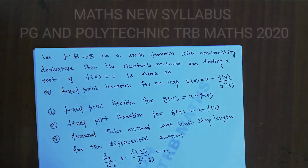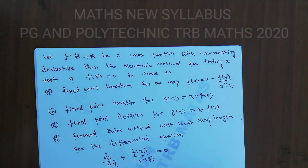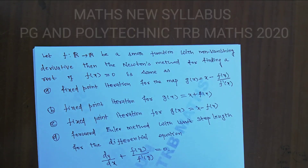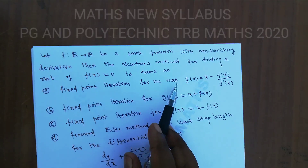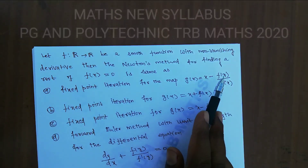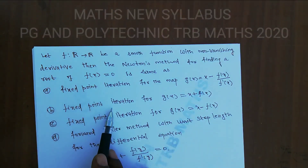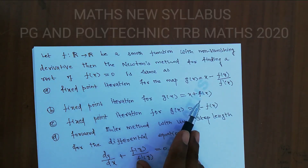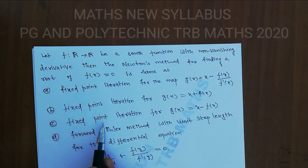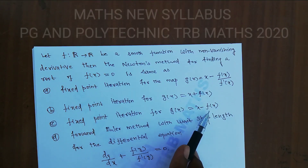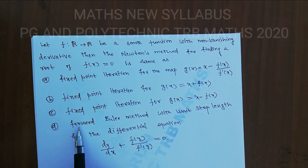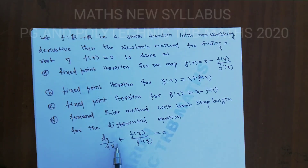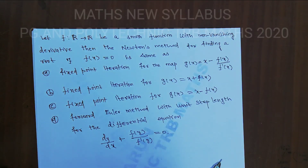Let f be a function from R to R, a smooth function with a non-vanishing derivative. Then the Newton-Raphson method for finding the root of f(x) = 0 is the same as: Option A — fixed point iteration for the map g(x) = x minus f(x) divided by f'(x); Option B — fixed point iteration for g(x) = x plus f(x); Option C — fixed point iteration for g(x) = x minus f(x); Option D — forward Euler method with unit step length for the differential equation dy/dx plus f(y) divided by f'(y) equal to 0.